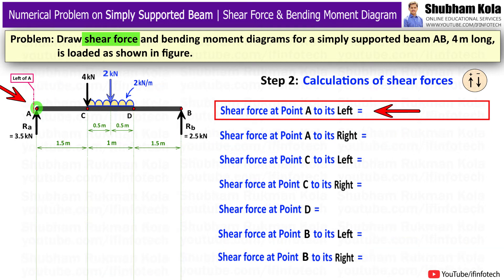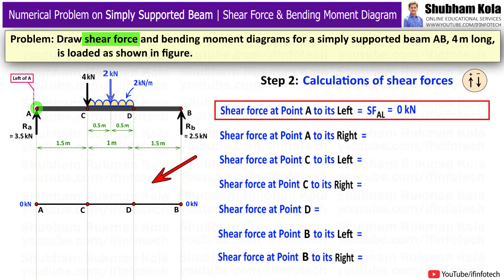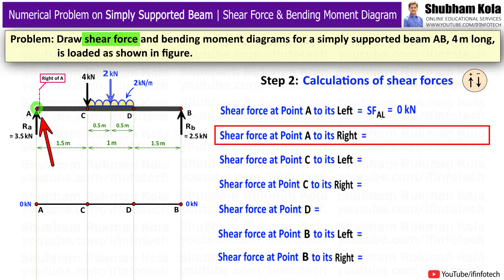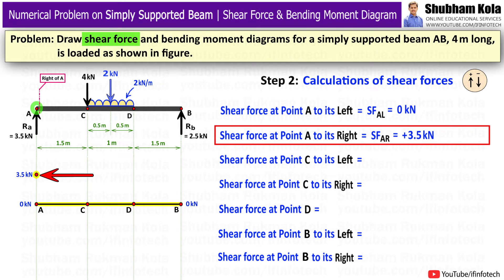SF at A to the left = 0 kN, as there are no forces acting to the left of point A. I draw a horizontal reference line at 0 kN and mark this point on it. SF at A to the right = +3.5 kN, since reaction force RA acts upward (positive). This is marked above the reference line, connected to the previous point with a vertical line.